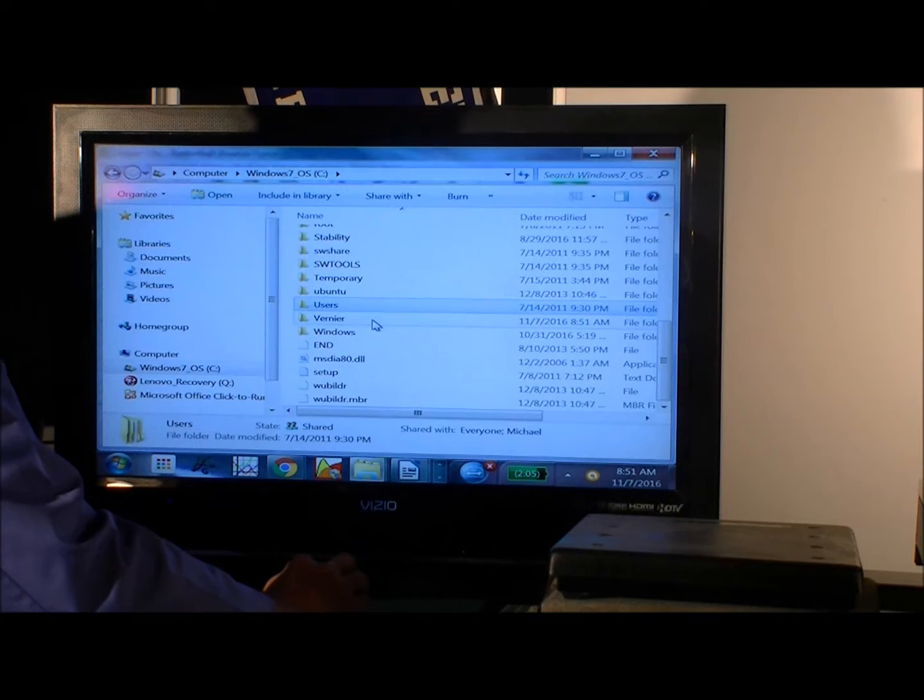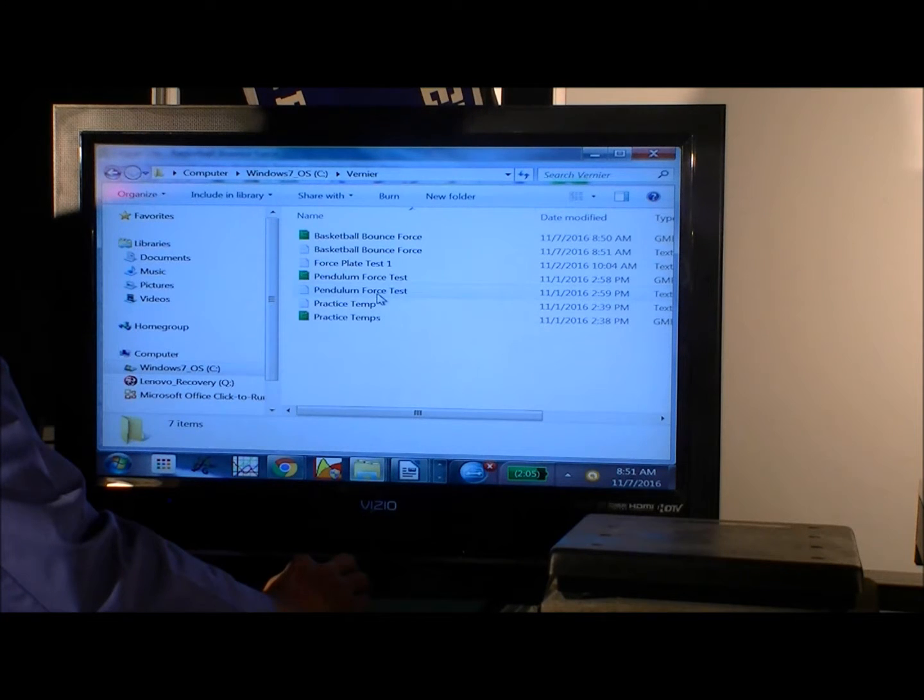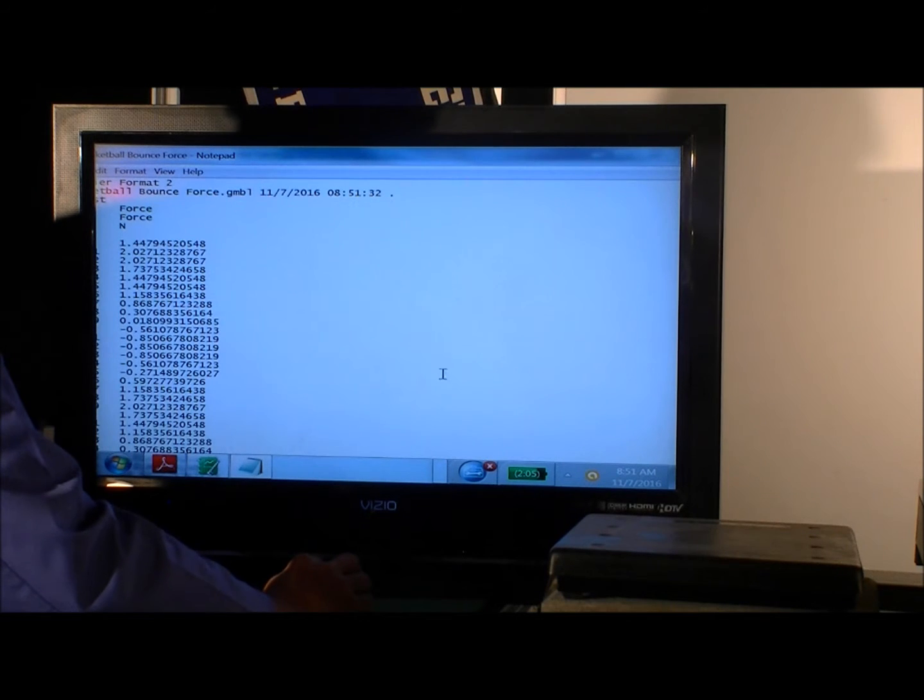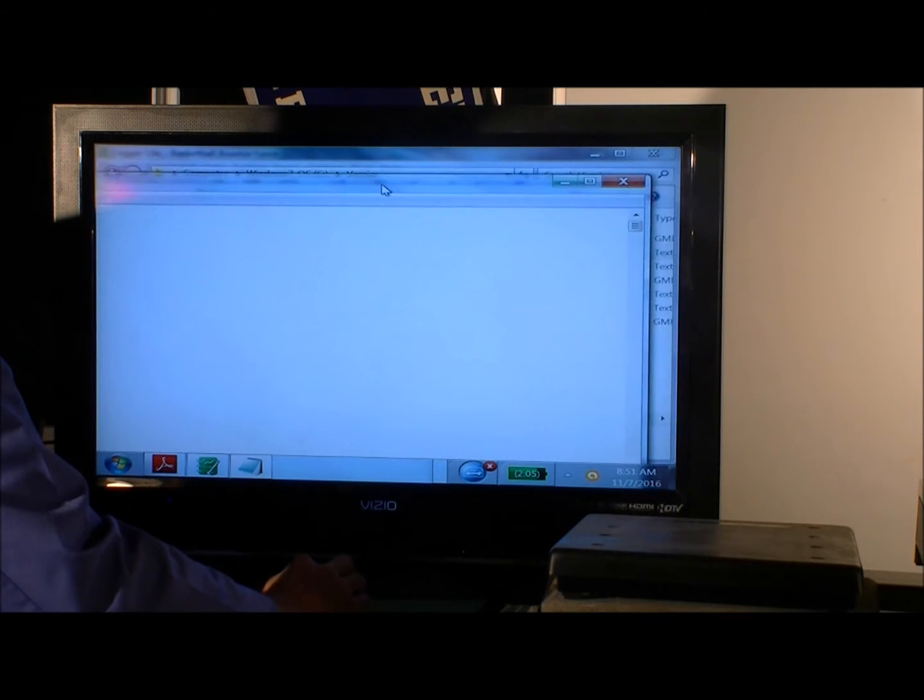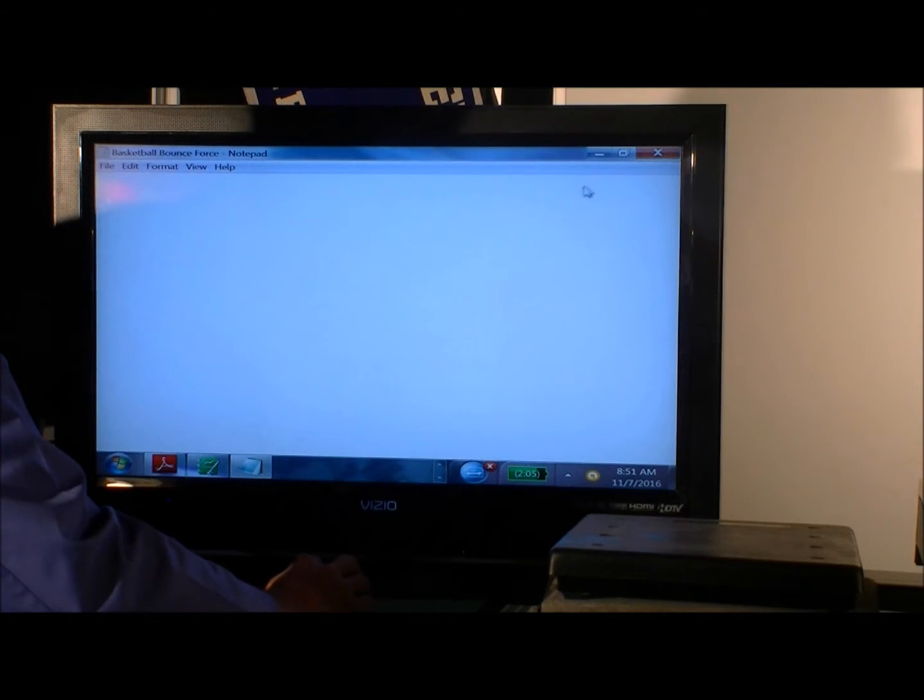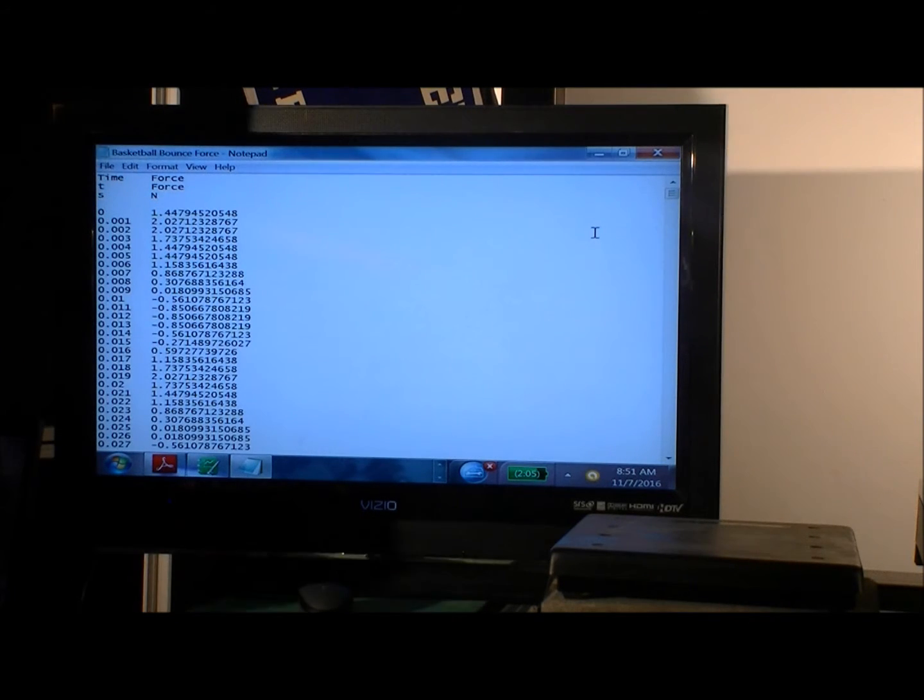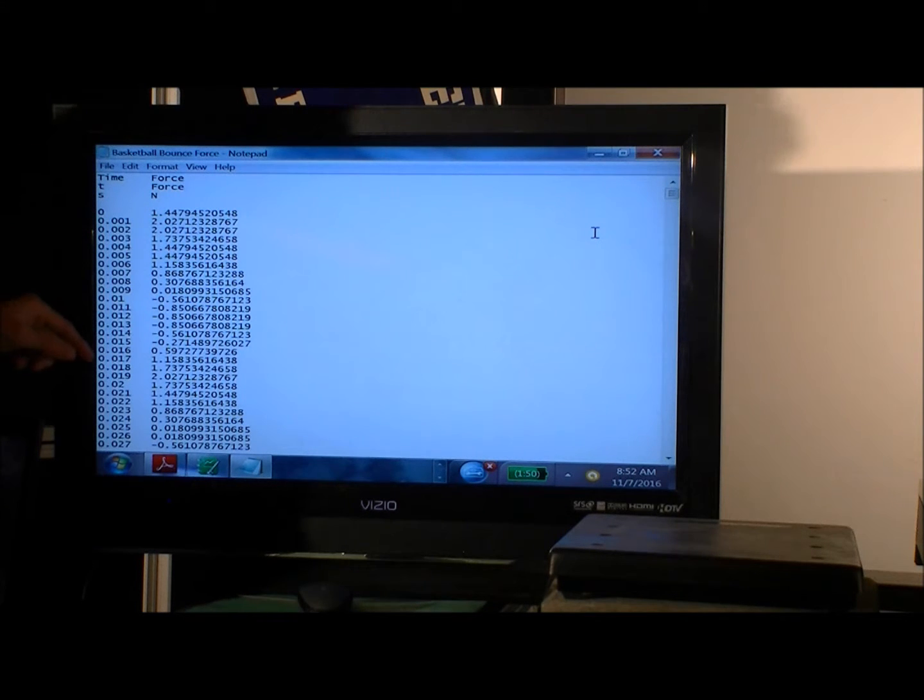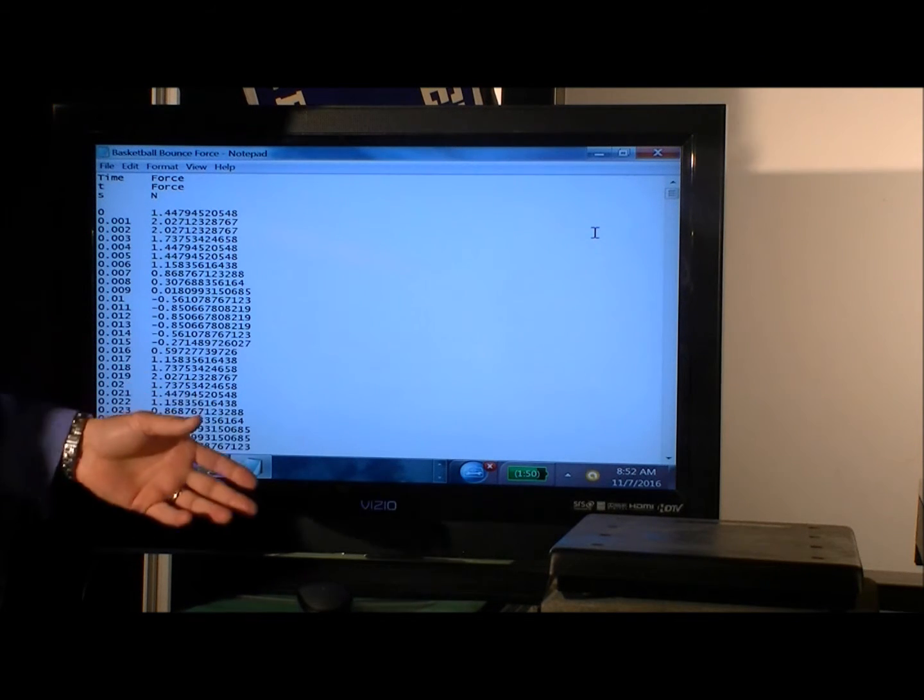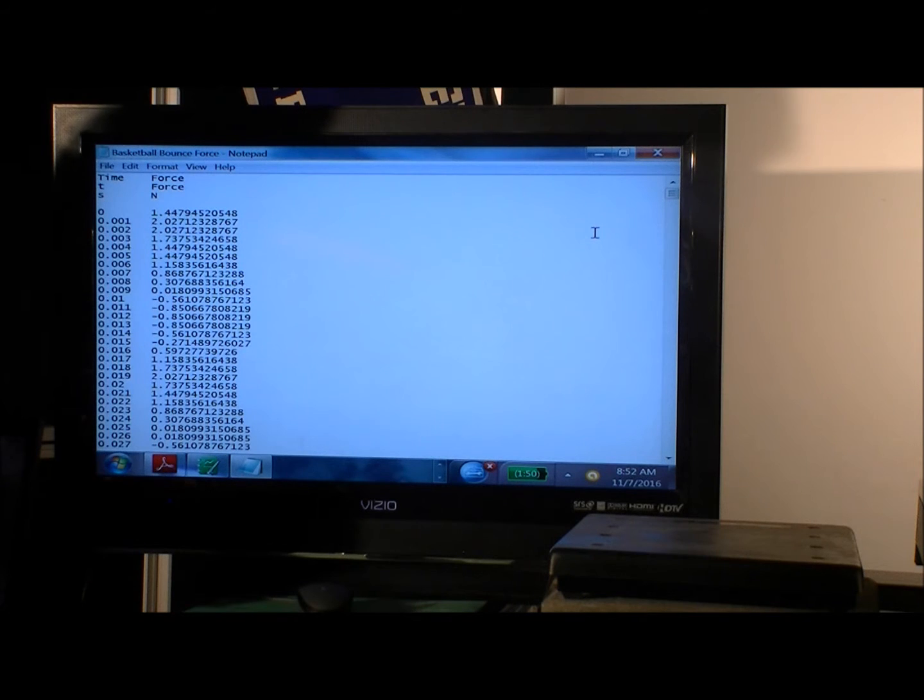We can open the file and see what we have in the file. And what you can see you have in the file is you have two columns. The first column is the time data acquired by the force plate measurement system, and then the second column is the force measurement that the force plate made in Newtons.